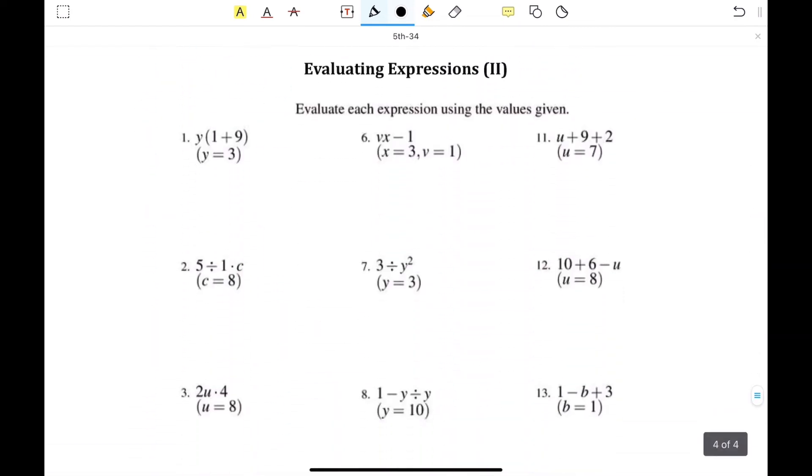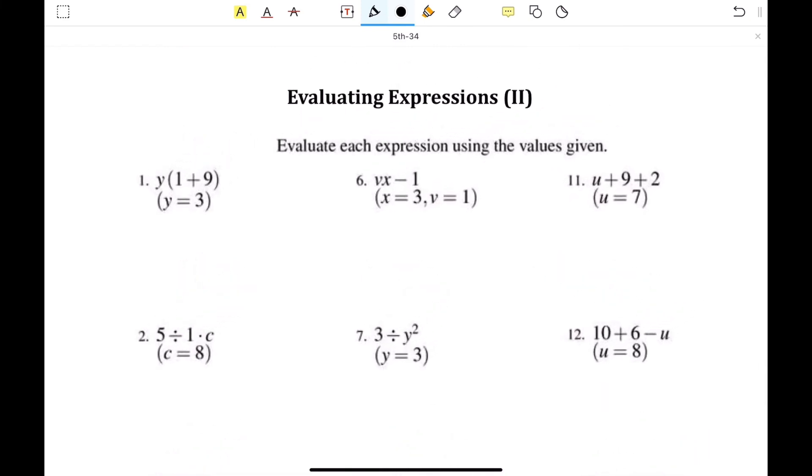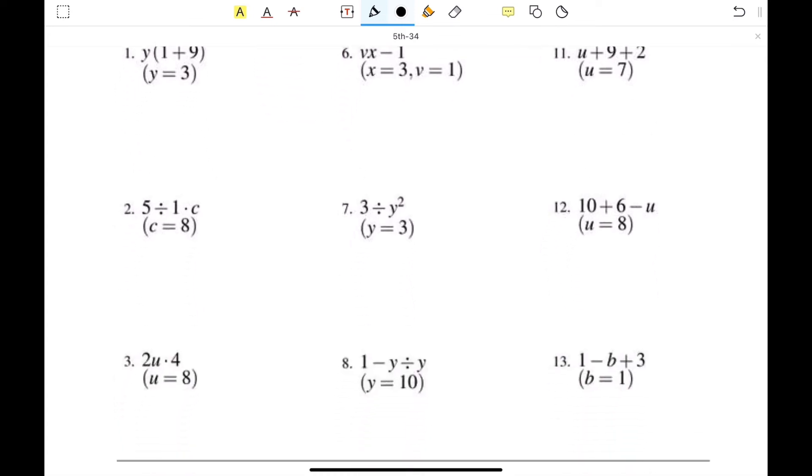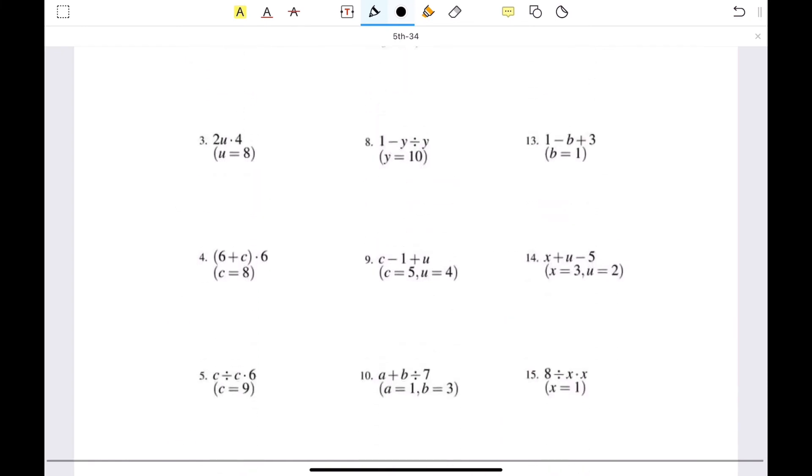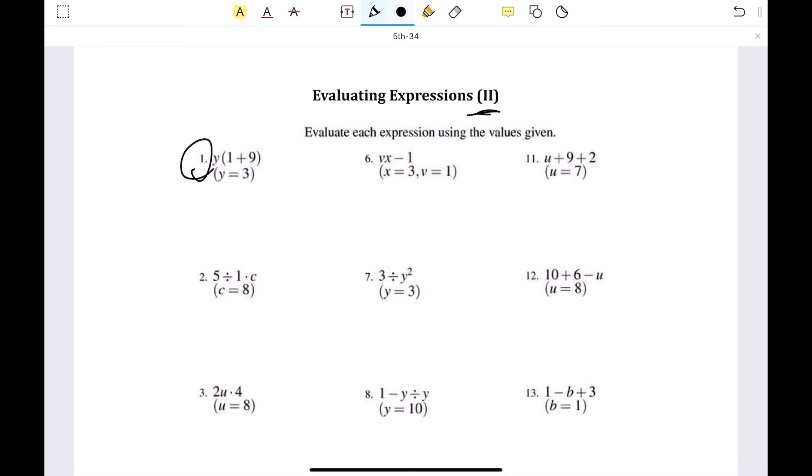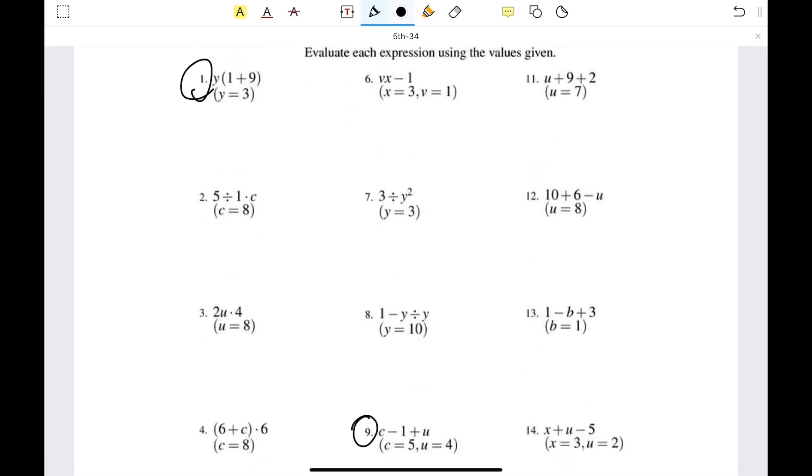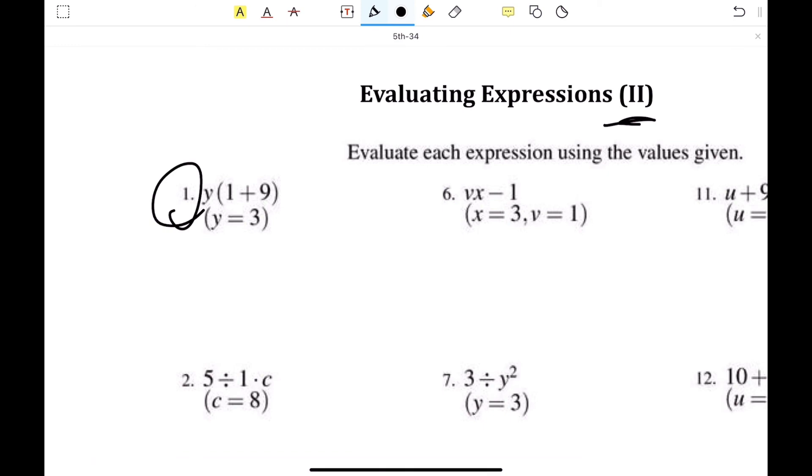And the third section is evaluating expressions. Evaluate expressions using the values given. And this is exactly the same as the previous one, which is part 2. And I'm assuming it's a little bit harder and more complicated. Some of them even have two variables with them. So I'm going to go over 1 with just one variable, which is number 1, and go over 1 with two variables, which is number 9. So number 1 is y parentheses 1 plus 9 parentheses. Whenever you see a parentheses, assume it means multiplication. So if y equals 3, I'm just going to plug it in now. So when you know PEMDAS, you know that you have to do the parentheses first. So I'm going to do 9 plus 1 first to get 10. And it's in parentheses, and this basically means 3 times 10. So we're going to get 30 as our final answer. For this one, PEMDAS is very important.